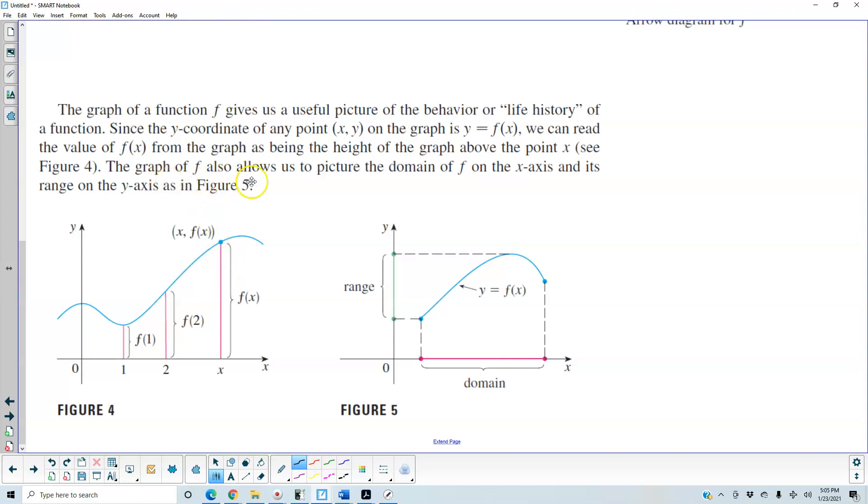Now the graph of f also allows us to picture the domain of f on the x-axis and its range on the y-axis as in figure 5. So here if we take a look at this graph it starts on the left here and then it goes up and then it ends over here. So now the red line here represents the domain of the function. So we can see here that from here to here represents the domain. And then the range represents the height of the function. So it goes from here to here, so therefore that represents the range.